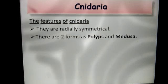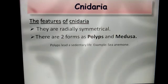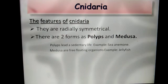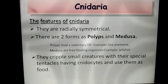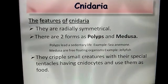There are two forms: polyps and medusa. Polyps are stuck in one place and lead a sedentary life — for example, Hydra. Medusa are free-floating organisms — for example, jellyfish. They catch small creatures for food using special tentacles that have nematocytes.